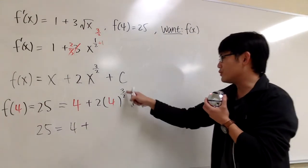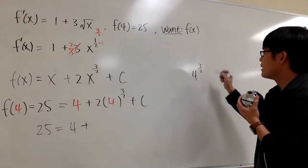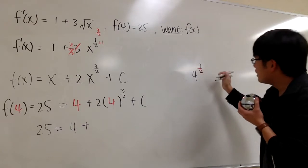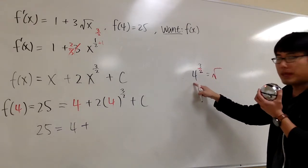So we are talking about 25 equals 4 plus, and what's this? What's 4 to the 3/2 power? Let me do it on the side for you. 4 to the 3/2 power. What we'll do first is we look at the half power, because the half power means we take the square root of the base, which is the 4.